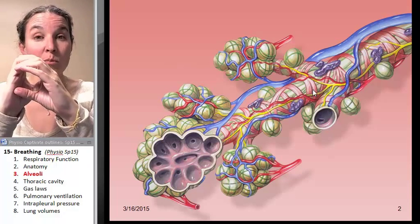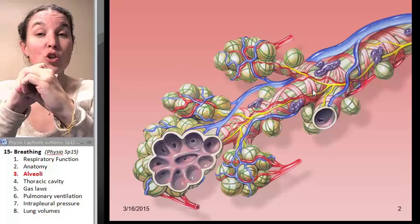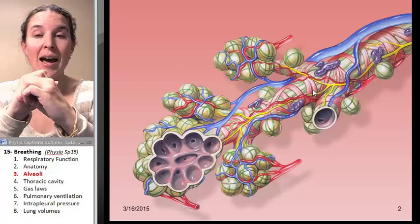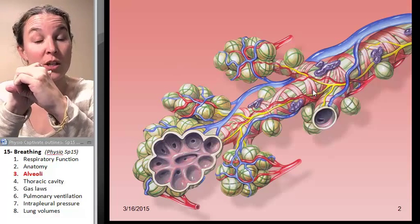You can imagine if you're surrounded by smooth muscle, if that muscle contracts, you're going to have constriction or decreasing of the diameter, and that's bronchoconstriction.